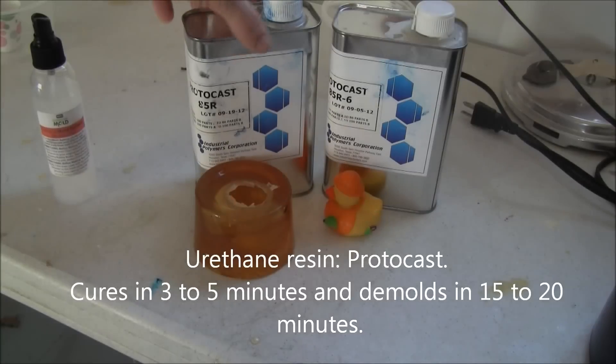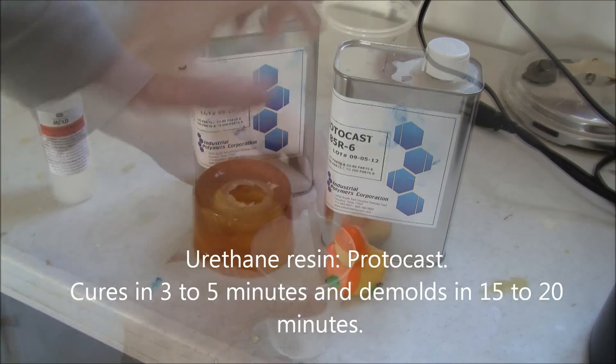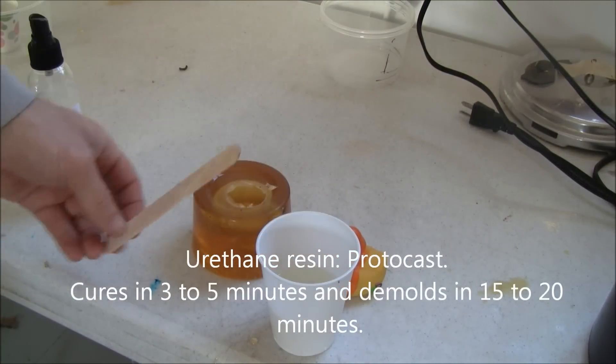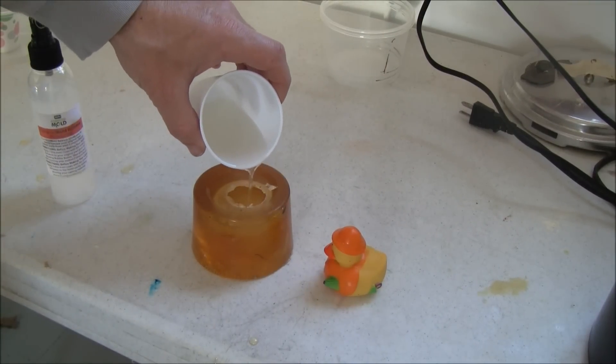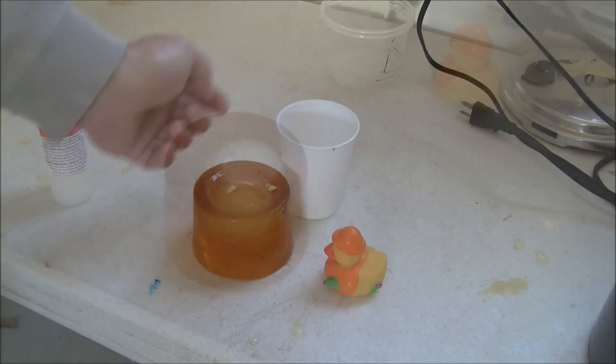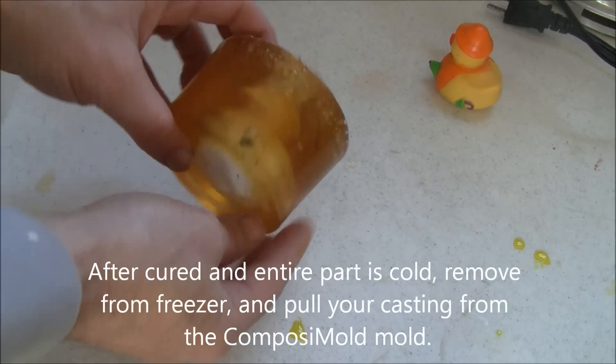The Protocast urethane resin is a bright white plastic with a demold time of approximately 15 to 20 minutes. While the mold is still cold, pour in the Protocast urethane resin. Urethane is mixed at 1 to 1 by volume.